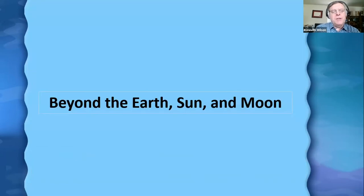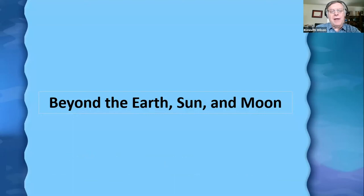We've talked about tides so far in context of the Earth, the Sun, and the Moon — the tides you're most familiar with. But tides don't just happen to the Earth, Sun, and Moon. They happen throughout our solar system and beyond, and I'd like to talk a little bit about that now.